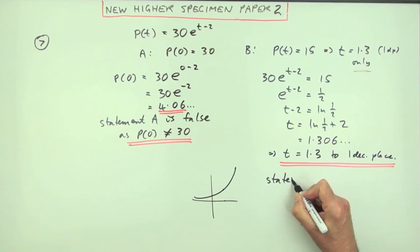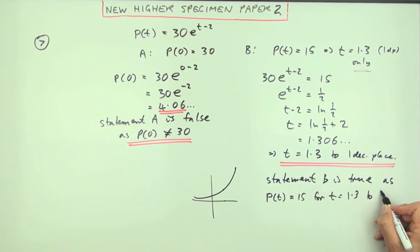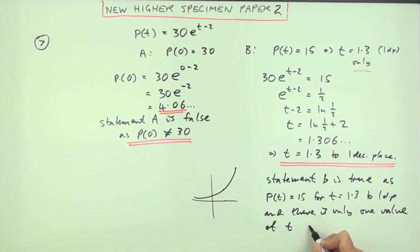So I've still got to finish it off. Statement B is true as P(t) equals 15 for t equals 1.3 to one decimal place, and there is only one value of t for each value of P(t). Seems a bit excessive to have to put all that down, best place safe, even put a little sketch to prove it.